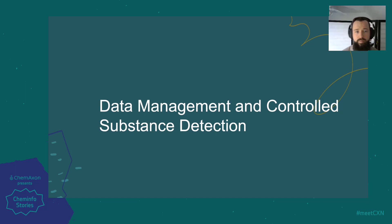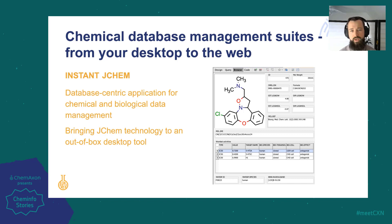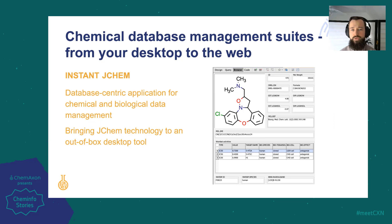We'll now talk about our data management and controlled substance detection tools, which we believe are crucial in effectively using and keeping track of all your generated data. We start with Instant JChem, which is by now a well-established mainstay of the cheminformatics arena. This desktop application allows users to connect to their corporate databases directly and generate form-based views of their data. Its true power lies in its ability to interact with tables in the database and create complex relationships between entities, harnessing the interrelatedness of your data. It can also easily work with our cartridge technologies, speeding up searching and structure handling on large-scale databases.